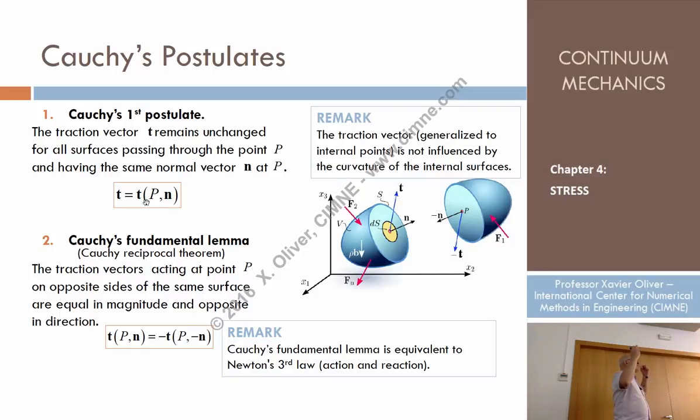And that's why postulates are so-called the building blocks of theories. Because it is something that is not trivial. If it's trivial, anyone can do it. But the genius just finds genial postulates. And that is the postulate. So in this regard, the cutting of this surface is done by different surfaces, all having the same normal, the traction vector doesn't change. That's important.